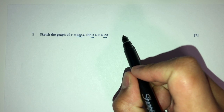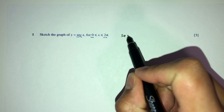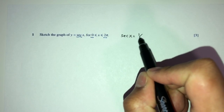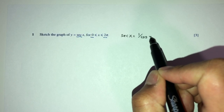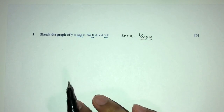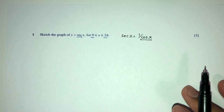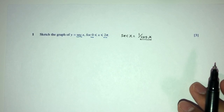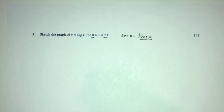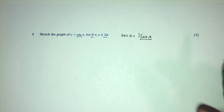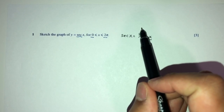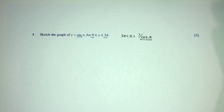One way to look at this — what is sec? You might ask yourself, what is sec? Sec is equal to 1 over cos. Now, we are very familiar with cos(x). So one way we can do this question is by simply thinking of the graph of cos(x), and then we can draw sec(x), because sec is only 1 over cos(x) — the reciprocal of the cos value.